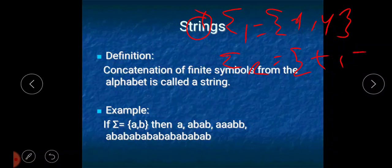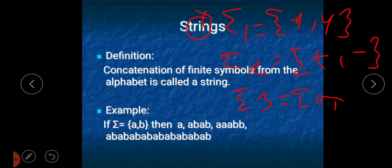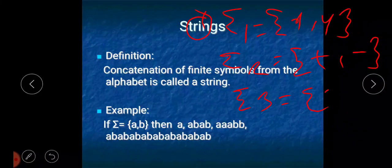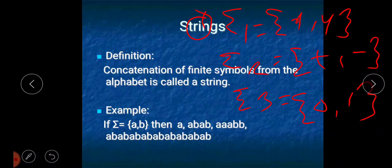And sigma3 is equal to {0, 1}. So sigma means alphabet, and alphabet can be denoted using sigma. Three different examples of alphabets: alpha1 contains x and y, alpha2 contains + and -, and alpha3 contains 0 and 1.